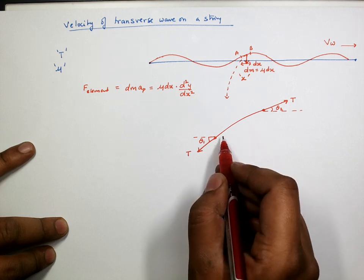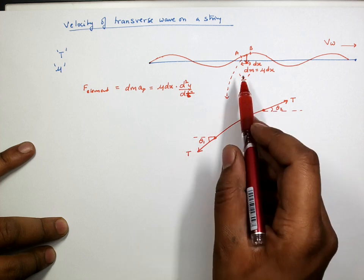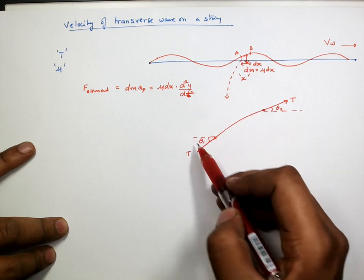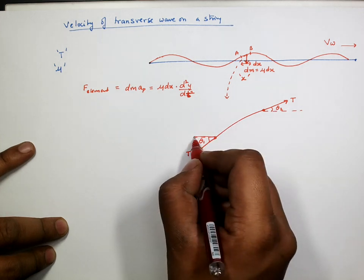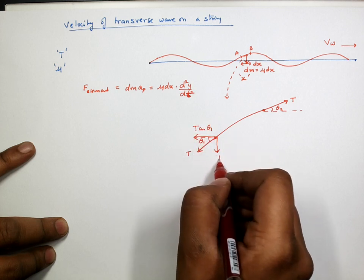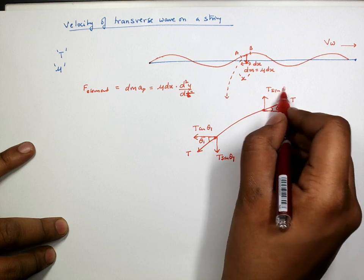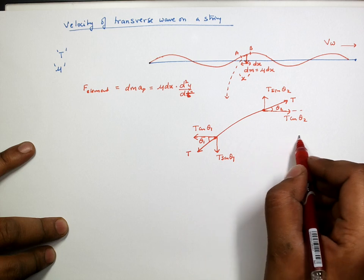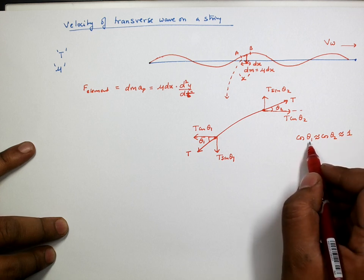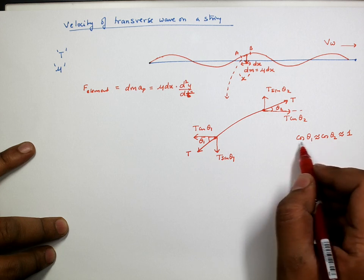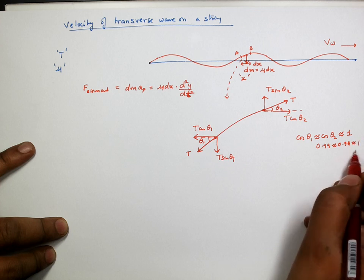We use Newton's laws of motion. The oscillation of this element is due to the two tension forces only. Taking components of these tension forces, we get T cosθ₁, T sinθ₁ on one side, and T cosθ₂, T sinθ₂ on the other. Since the angles are very small, cosθ₁ ≈ cosθ₂ ≈ 1, because even values like 0.99 or 0.98 can be approximated as 1 for small angles.